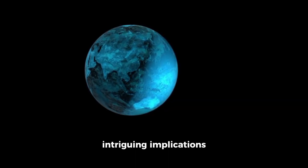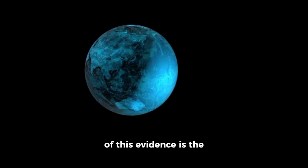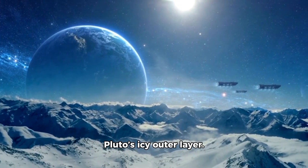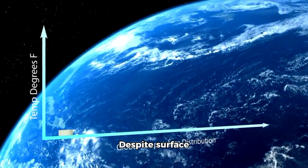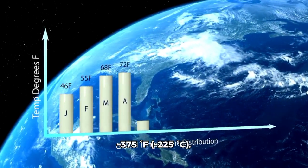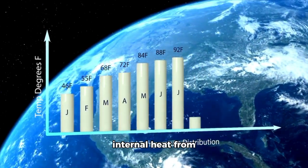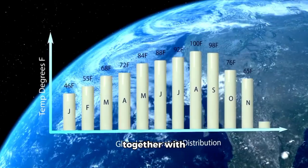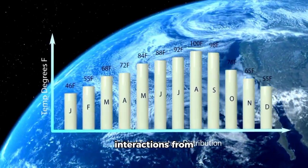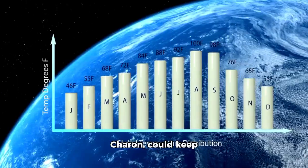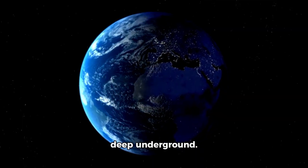One of the most intriguing implications of this evidence is the possibility that a vast ocean exists beneath Pluto's icy outer layer. Despite surface temperatures plunging to around minus 375 degrees Fahrenheit, models suggest that internal heat from radioactive decay, together with gravitational interactions from its large moon Charon, could keep water in liquid form deep underground.